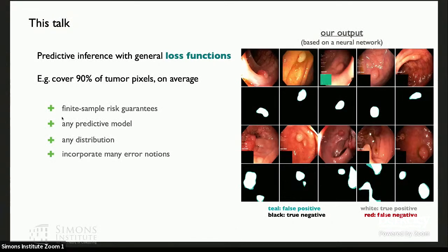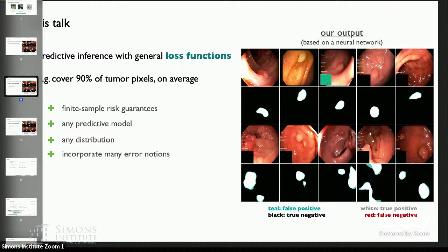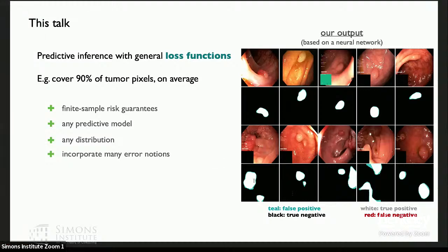It turns out we can do this with finite sample guarantees, precise guarantees I'll show you in a couple slides. It'll work with any predictive model, which is to say we can build it on top of a black box neural network, whatever that happens to be. And it will work with any distribution. So you don't need to posit regularity conditions on the underlying distribution of, say, images of tumors, in this case, or colonoscopy images. The only assumption underlying the inference is that you have some IID sample from a population. And in particular, as I said before, we're going to work with sort of a general set of statistical error rates.